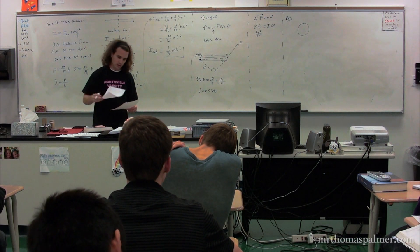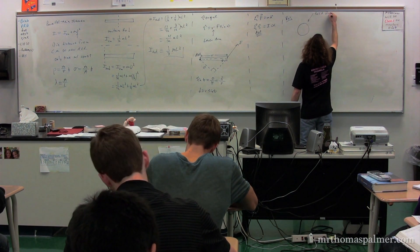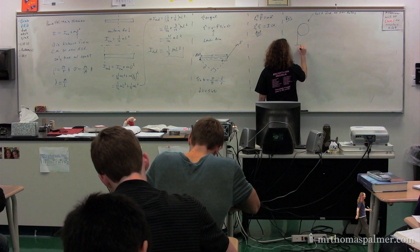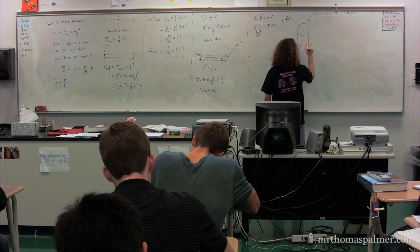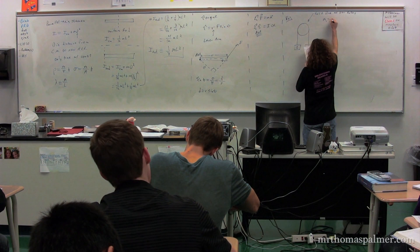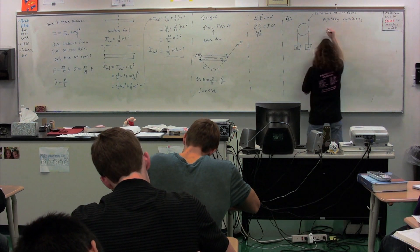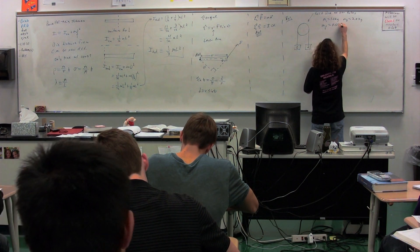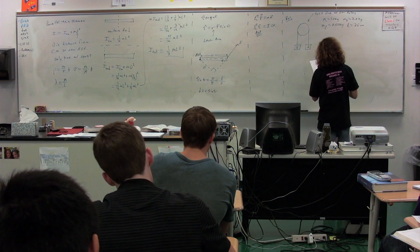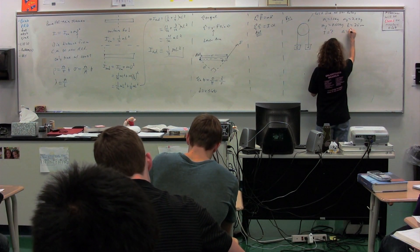We have a solid disk which is a pulley, and we have two masses hanging from our disk. We have mass one and mass two. The mass of the first one is 1.0 kilograms, the mass of the second is 2.0 kilograms. The mass of the pulley is 0.50 kilograms, and the radius of the pulley is 25 centimeters. I want to know: what are the tensions in the ropes, and what is the acceleration of the system?